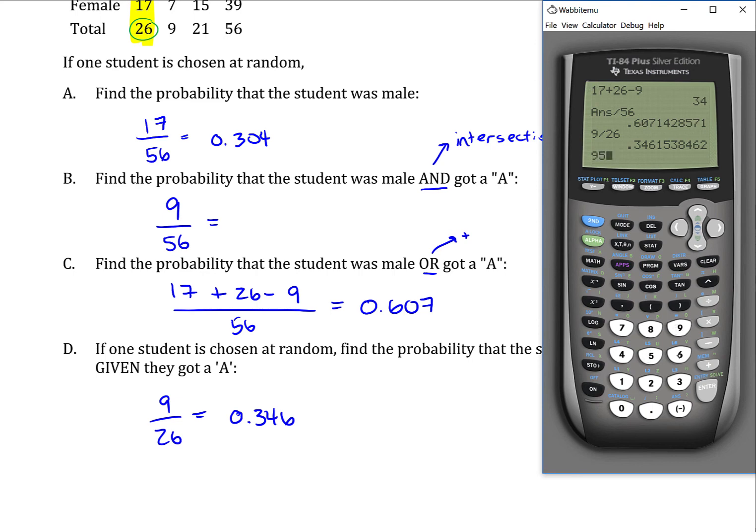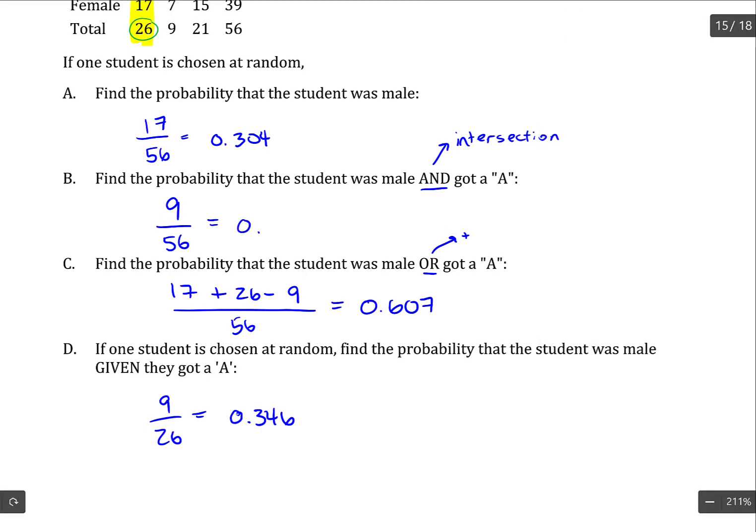And I just realized I didn't convert part B to a decimal. So 9 over 56 equals 0.161.